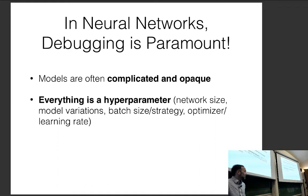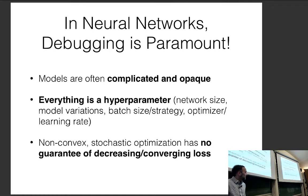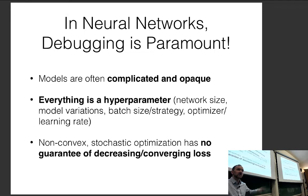Another thing is everything is a hyperparameter — the network size, model variations, batching size, strategy, optimizer, learning rate — these are all things that can affect your final performance. Also there's non-convex stochastic optimization, which has no guarantee of decreasing or converging loss. If you've implemented convex optimization like logistic regression or support vector machines, a diverging loss means a bug; with neural nets that guarantee doesn't hold.